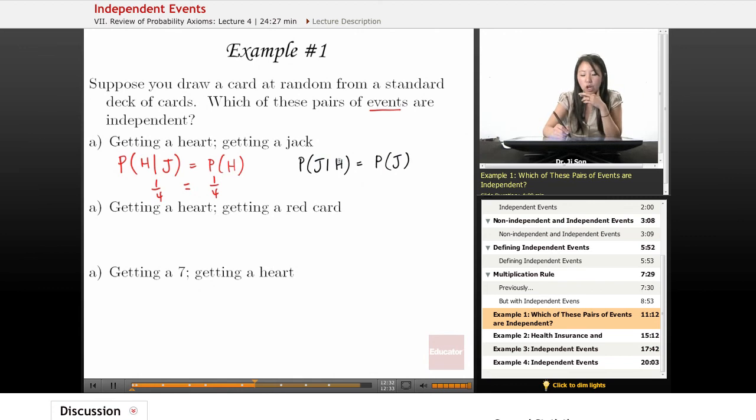Well, the heart world is 13 cards, right? So out of 13, there's only one jack. So that's one out of 13. And the probability of drawing a jack is 4 out of 52, which is 1 out of 13.